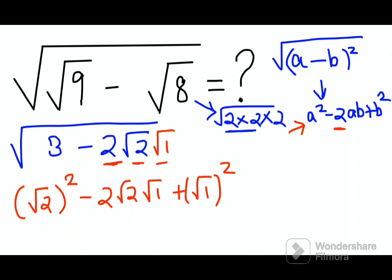Now for those of you who are wondering what is happening to your 3, this root 2 square comes out to be 2, this root 1 square comes out to be 1. When you add them, you get your 3.